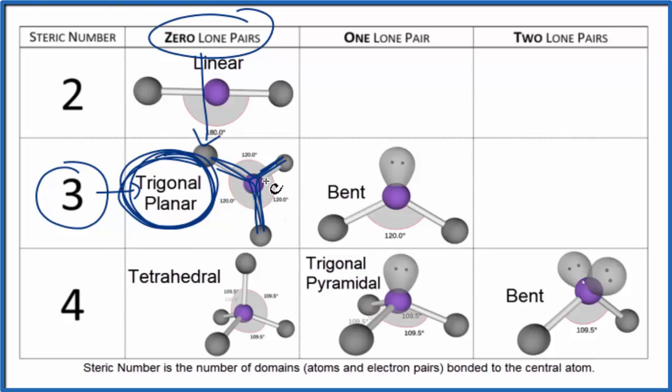We could also use the AXE notation to figure out the molecular geometry. If you're asked to do that, A is the central atom. X is the number of atoms bonded to the central atom. We have one, two, three, those three hydrogens. And E is the lone pairs. We don't have any lone pairs. Sometimes it's written as zero. You would either then look up AX3 or have it memorized that that's trigonal planar.